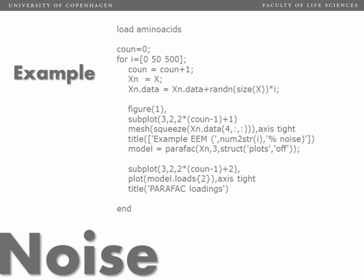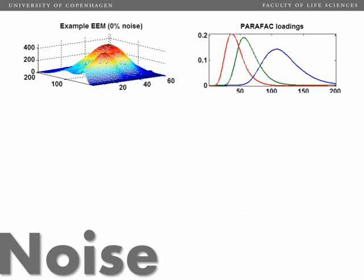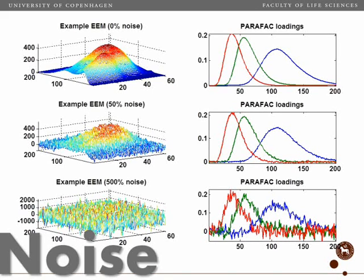Here's an example—not very intuitive, but this script will generate an example of how we can handle missing data. It's going to add 0, 50, and 500 times some random numbers to a dataset. I'm not going to explain the actual script, but it's here for your convenience if you want to try it in MATLAB. It adds 500% of noise.